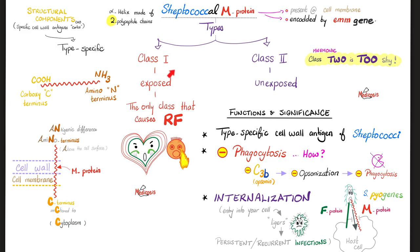How to remember: class 2 is too shy — unexposed — versus class 1, which is promiscuous. Another function of the M-protein is internalization of the bacteria into your own cell. The bacteria lingers in your cell for a longer period of time, and this is the reason behind persistent recurrent strep infections. The M-protein, together with the F-protein, helps strep pyogenes attach to your cell, get internalized, and linger there, causing persistent and recurrent strep infections.